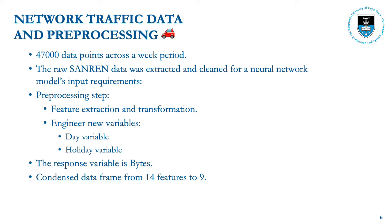The SAMRAN sample we used had 47,000 data points taken from a one-week period, compared to 9 million data points per day from the entire SAMRAN observation population. This data was extracted and cleaned for a neural network's input based on TensorFlow requirements. The pre-processing step included feature extraction and transformation, such as one-hot encoding of categorical variables and the removal of strings, as well as the engineering of new variables such as day and holiday, to answer our research question checking the relationship between the university calendar and the flow of bytes on SAMRAN.